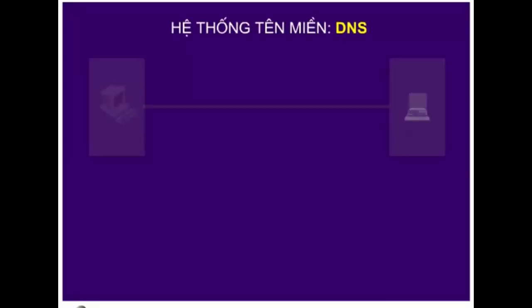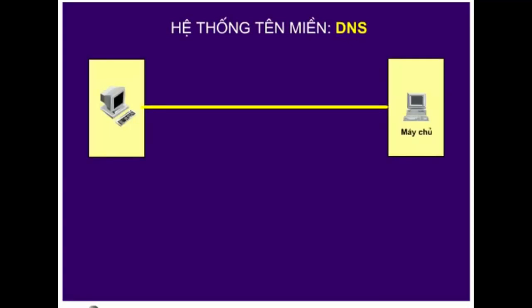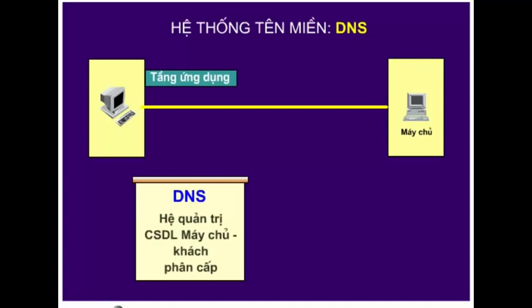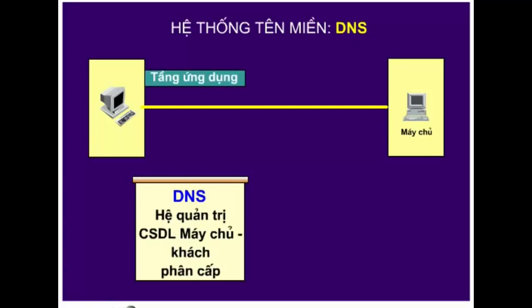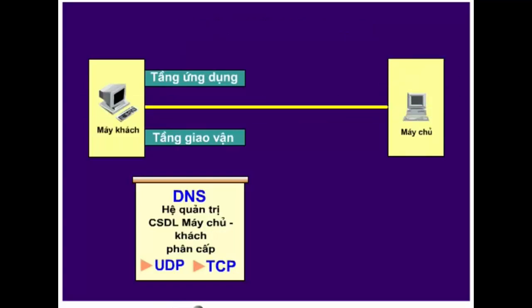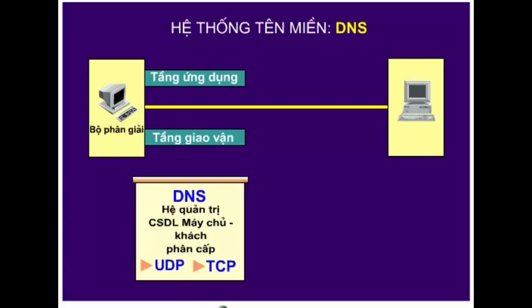Cuối cùng, chúng ta hãy tìm hiểu hệ thống tên miền DNS. DNS là một hệ thống quản lý cơ sở dữ liệu khách-chủ phân cấp đặt tại tầng ứng dụng. DNS sử dụng cả hai giao thức tầng giao vận là UDP và TCP. DNS được dùng để biên dịch tên máy tính thành địa chỉ IP. Trong hệ thống DNS, máy khách được gọi là bộ phận phân giải và máy chủ được gọi là máy chủ tên miền.